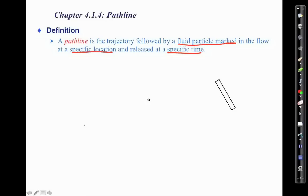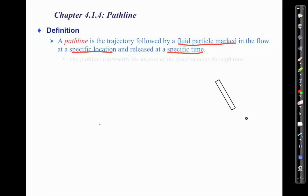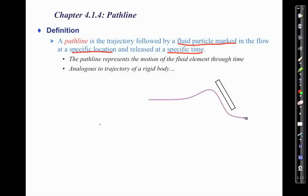Here's a little blob of fluid that we've marked, moving through an unsteady flow. There's flow created by a plate oscillating back and forth, and the pathline is simply the purple line shown here. This represents the motion of that fluid element through time, and it's analogous to the trajectory you'd have for a rigid body — something you've probably already done in your undergraduate dynamics course.